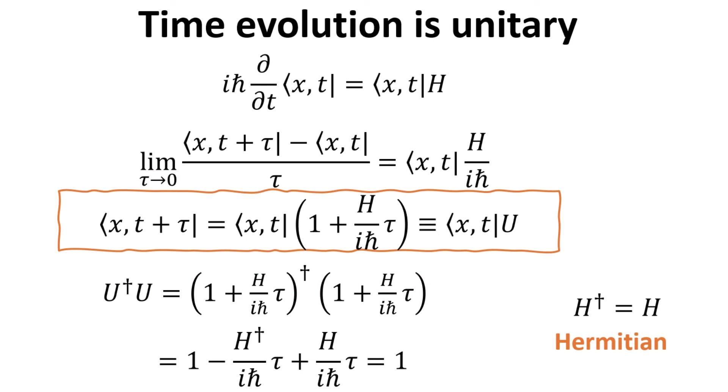Starting with the Schrödinger equation for x-bra, we seek to prove that the time evolution operation is unitary. We begin by writing the differential in time as a differential change in the x-bra with infinitesimal time step tau. Rearranging the terms, we arrive at the equation in the orange box, expressing the x-bra at a later time step to that in the previous time.